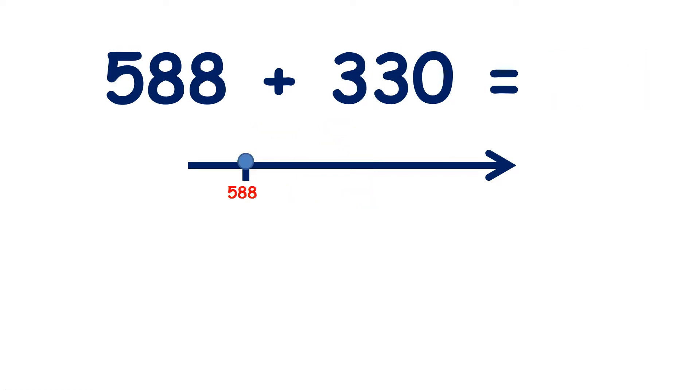Now we have 588, and we need to add 330. So we need to add 3 hundreds and 3 tens. So if we have 5 hundreds and we add 3 hundreds, that takes us to 8 hundreds, because 5 plus 3 is 8. So we have 888.